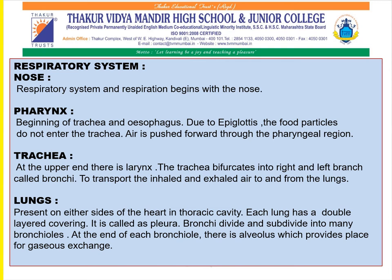Next, the pharynx is present at the beginning of the trachea and esophagus. Due to the epiglottis, food particles do not enter the trachea. The windpipe is present in front of the food pipe, and there is a flap at the beginning of the windpipe. This flap closes the windpipe during the passing of food into the food pipe, thereby preventing entry of food particles into the windpipe. The windpipe remains open and air is pushed through the pharyngeal region.